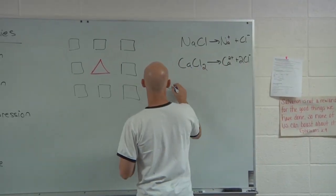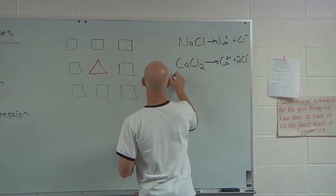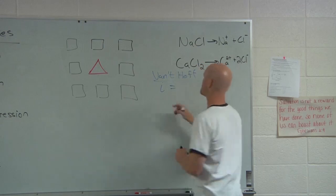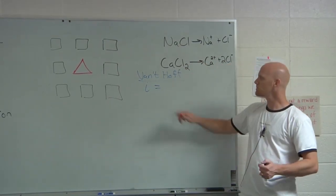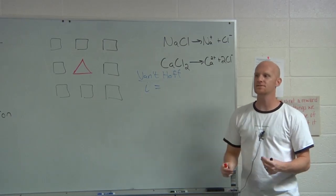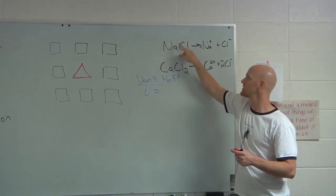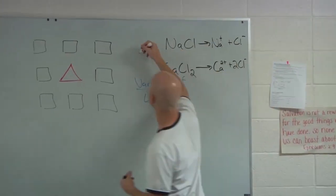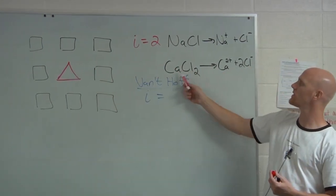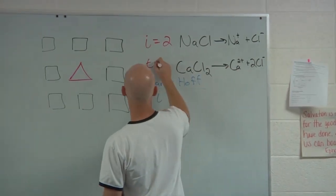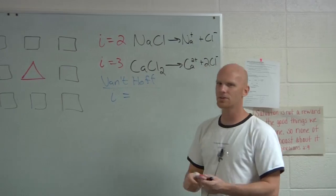We define what's called a Van't Hoff factor, with the symbol lowercase i. It is the number of pieces a particular compound breaks up into. NaCl breaks into two pieces, so its Van't Hoff factor is two. Calcium chloride's Van't Hoff factor would be three.